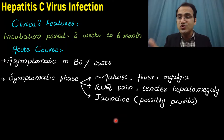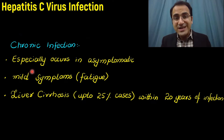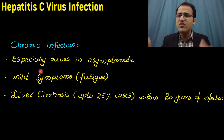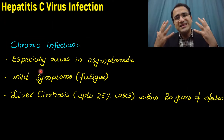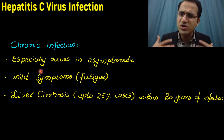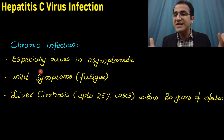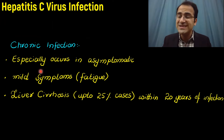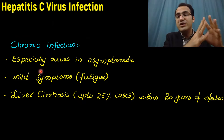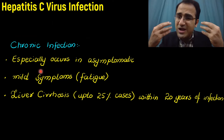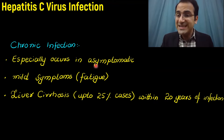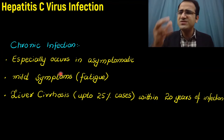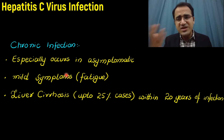70% of hepatitis C cases develop chronic infection, especially in asymptomatic individuals. A patient who does not develop symptoms in the acute phase won't seek medical care, won't be tested for hepatitis C, and will ultimately develop infection lasting greater than six months — chronic hepatitis C. In chronic infection, patients either have no symptoms or very mild symptoms including chronic fatigue and malaise.